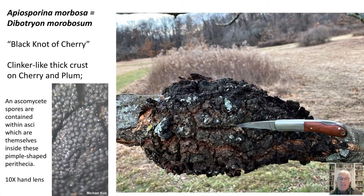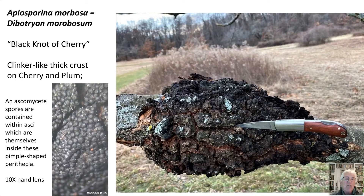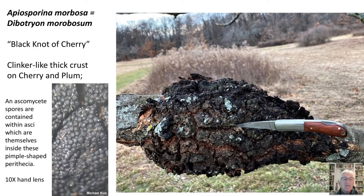Sometimes chaga is confused with another fungus that also has a bitter flavor. This is actually a totally different kind of mushroom — an ascomycete, not a basidiomycete — called black knot of cherry. It grows on a cherry branch and looks like chaga. People collect it, boil it up, and drink it. These are the little perithecia in which the asci are contained — you can see it right there.